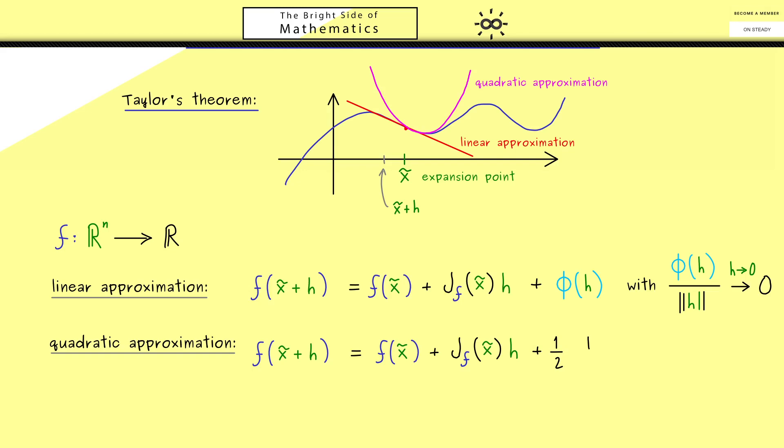Moreover, usually this is denoted with a capital H. Now, how this one is exactly defined, we will discuss in another video. Here I first want to concentrate on how the quadratic approximation works. Hence this means, this term now should be the quadratic term, which means the vector h should come in two times. So you know, roughly said, we need it squared.